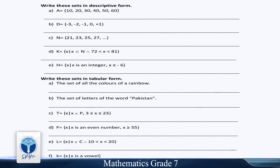C: N = 21, 23, 25, 27, and so on. D: K, if x is greater than 72 and x is less than 81. E: H is equal to x whenever x is in integers and x is less than or equal to minus 6.